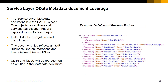What information is covered in the SAP Business One Service Layer metadata document? The metadata document links the SAP Business One objects as entities and services as actions exposed by the Service Layer, as well as the navigations and associations between them.